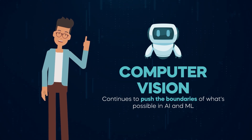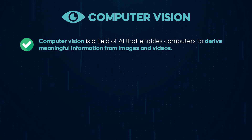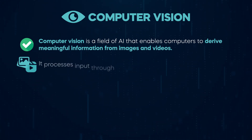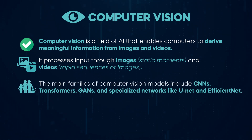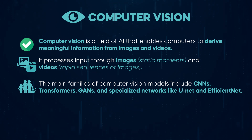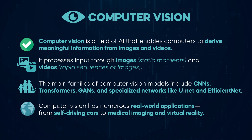Let's recap the key points we've covered. Computer vision is a field of AI that enables computers to derive meaningful information from images and videos. It processes input through images — static moments — and videos — rapid sequences of images. The main families of computer vision models include CNNs, transformers, GANs, and specialized networks like UNet and EfficientNet. Computer vision has numerous real-world applications, from self-driving cars to medical imaging and virtual reality.